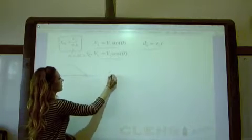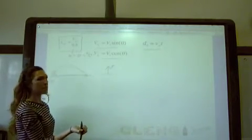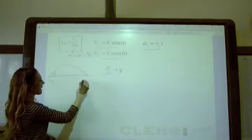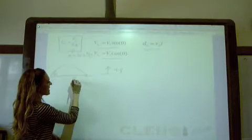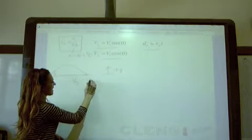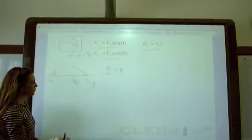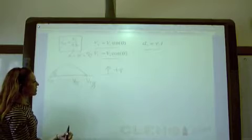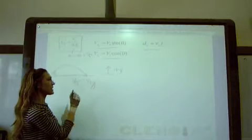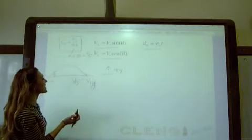So if we call the up-direction positive y, then we're going to have Viy here, and our Vfy is going to be equal to negative Viy. So that's just a good thing to remember. It doesn't actually play in the equation that we're going to use here, but that's definitely something that physics teachers like to ask on tests.